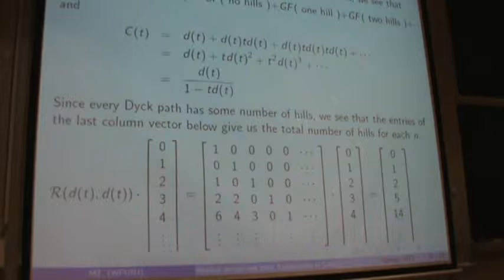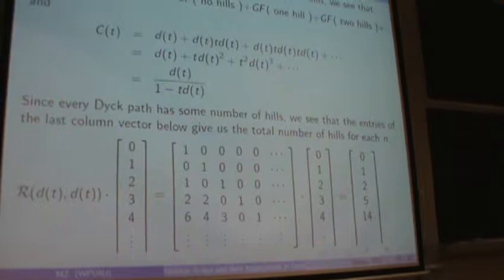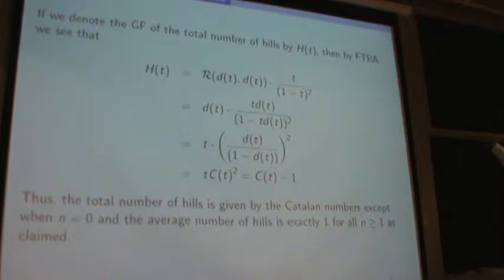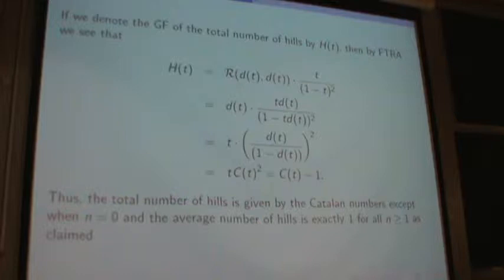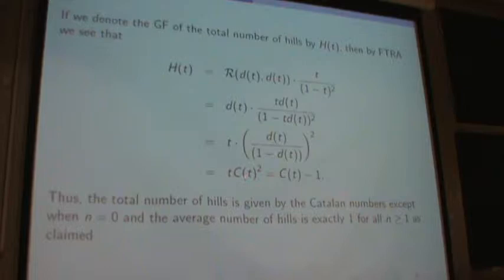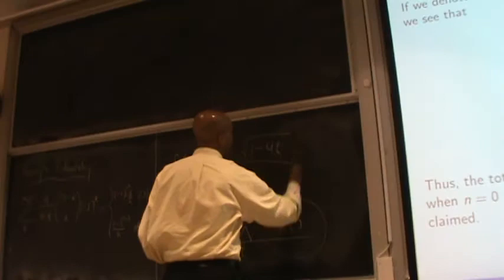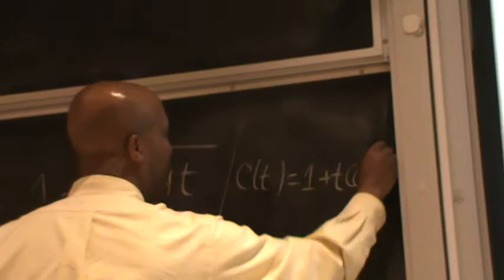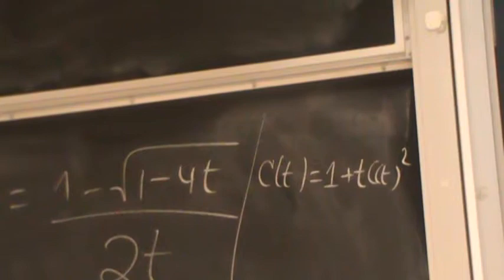Denoting the generating function for the right-hand column by H of T and applying the fundamental theorem of Riordan arrays, I get a relationship which boils down to T times C of T squared, because D of T over one minus D of T was shown to be the Catalan number generating function. There is also a well-known functional equation for Catalan numbers: C of T equals one plus T times C of T squared.